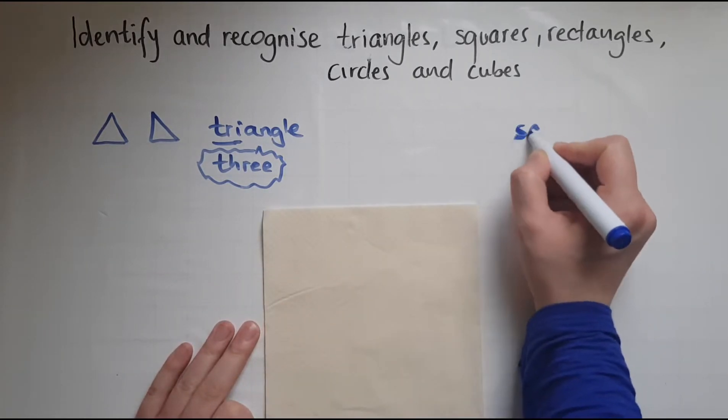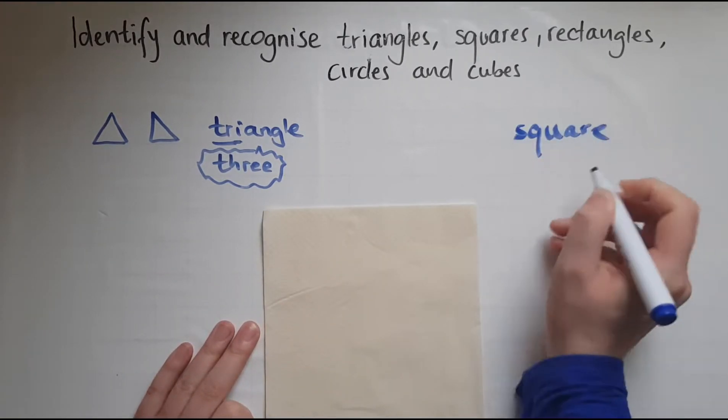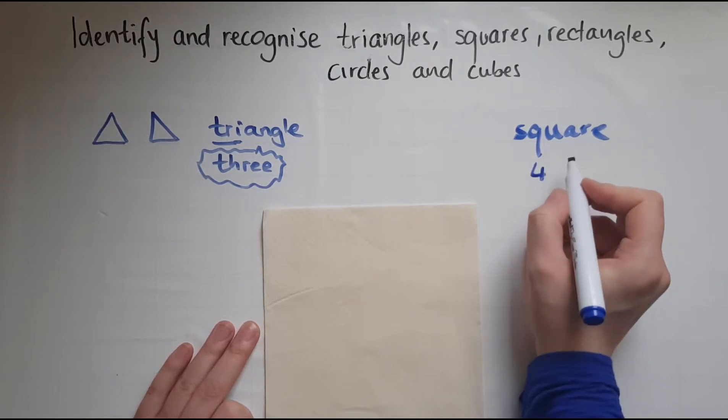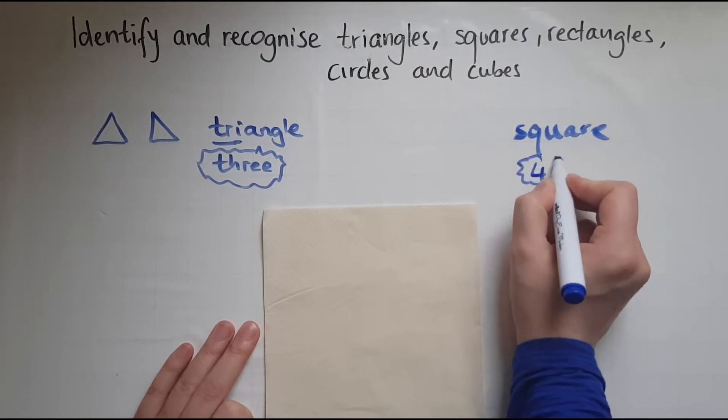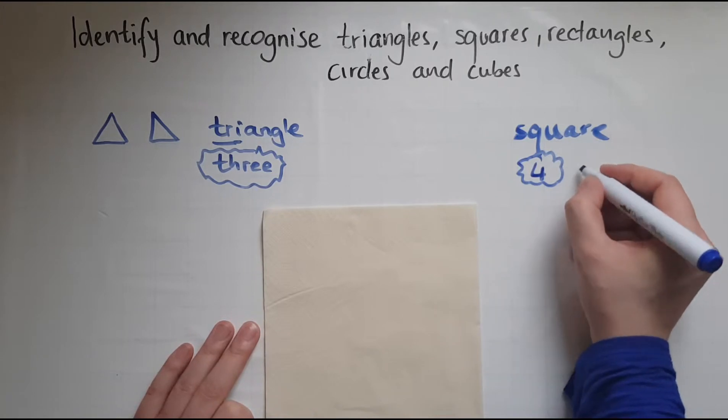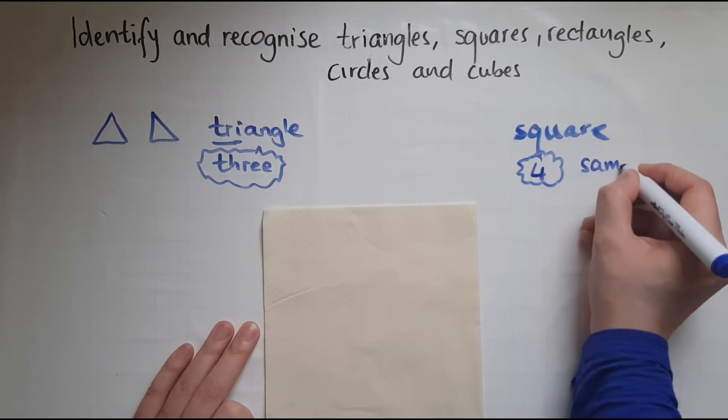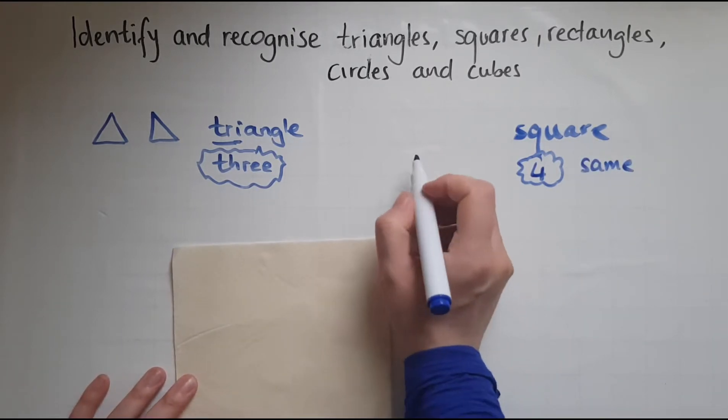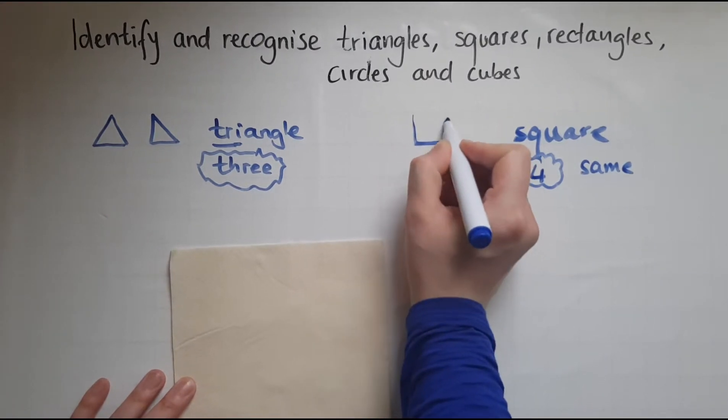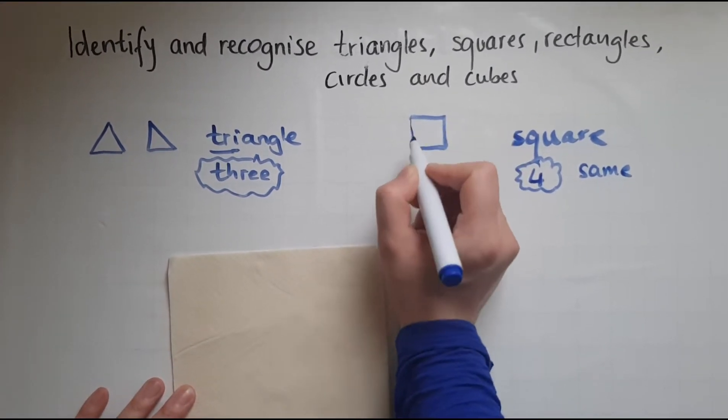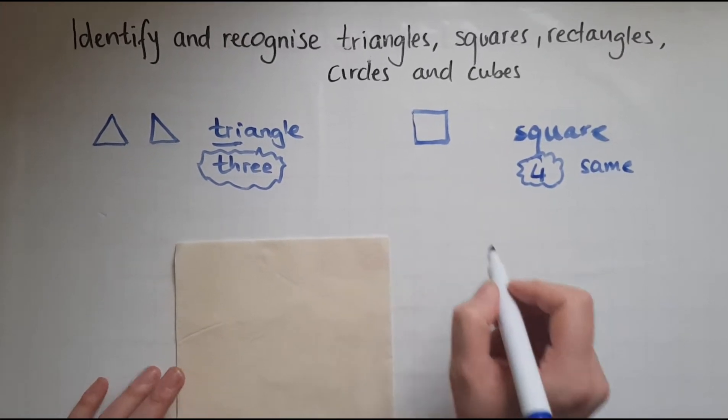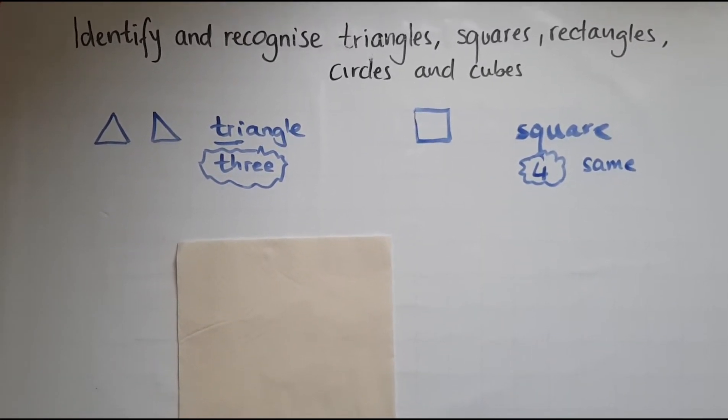So square, it's got four, like a quad bike, but they're all the same length. Like the square paper, a square looks like this. It has four sides, which are all the same.